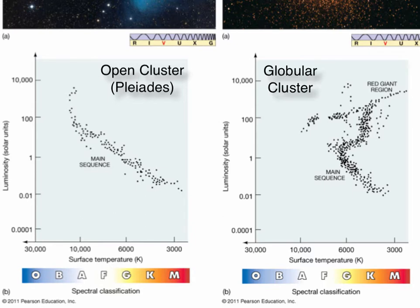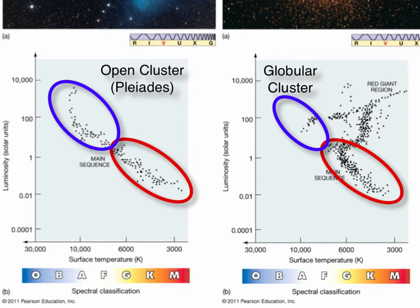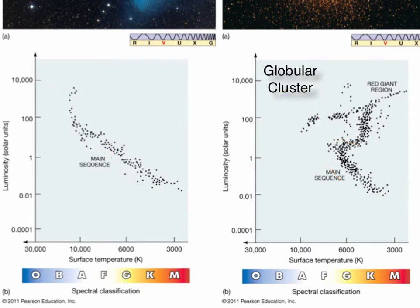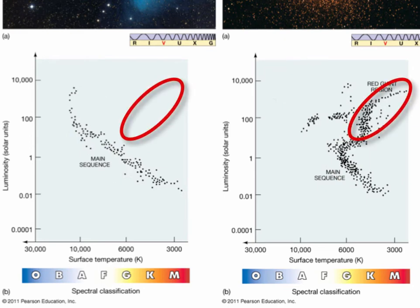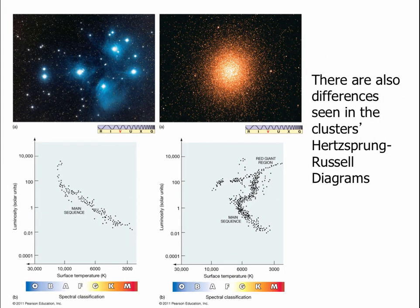On the right we have a globular cluster, showing a typical globular cluster Hertzsprung-Russell diagram. Most of the main sequence — especially for the bright blue stars — is not there. We see the main sequence only for the cooler, fainter, low-mass stars, and then we see a lot of red giants. If we looked closer, we'd also see a lot of white dwarfs in this star cluster, though they're not plotted on this graph.